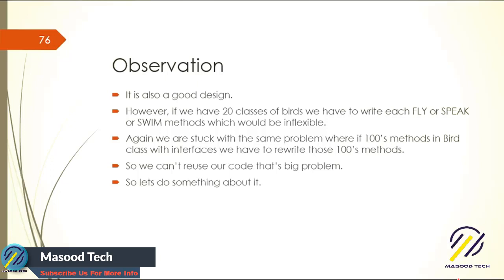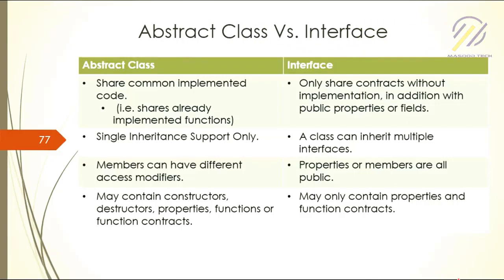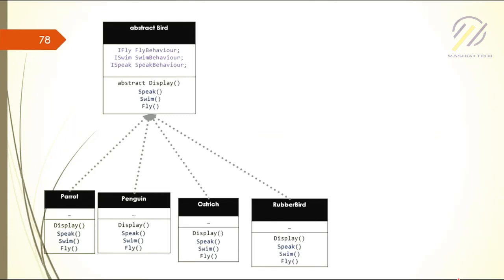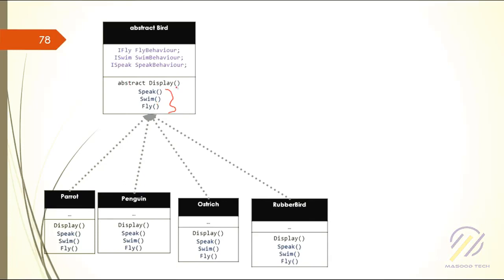We really want to reuse our code and we can't do it here, so it's a big problem. The solution, as discussed in the abstract class versus interface comparison, involves analyzing the problem differently. In the abstract Bird class, we add properties for IFlyBehavior, ISwimBehavior, and ISpeakBehavior, along with an abstract Display method.